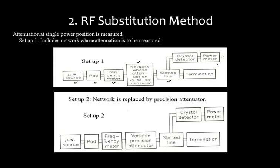In the second setup, everything is the same except that you replace the network under test with a variable precision attenuator. If in setup one you are getting, say, 1 watt of power, you then vary the precision attenuator in setup two until you also get 1 watt. The attenuation reading on the variable attenuator at that point equals the attenuation of the original network. This makes it a very simple and accurate measurement setup.